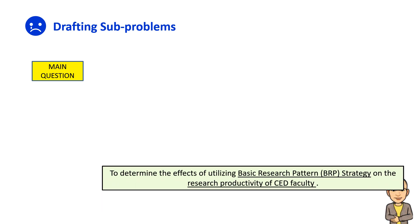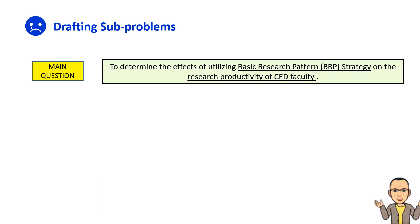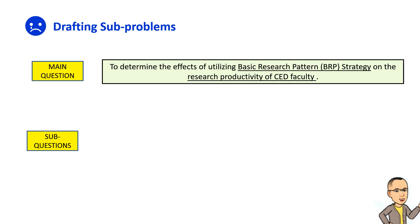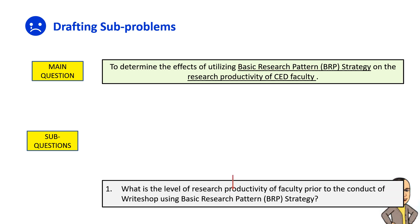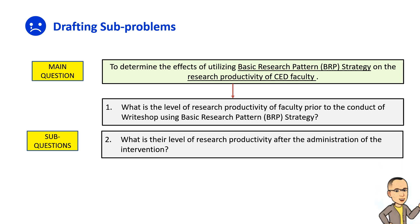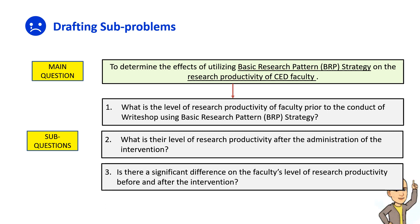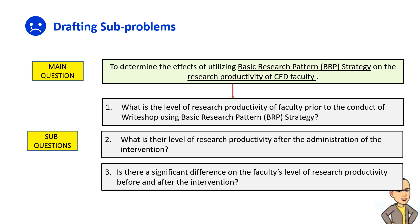After the main question or main problem is formulated, the crafting of research sub-questions follows. The identification of sub-problems depends on the scope or breadth of the study. The number of sub-questions can be initially determined by the researchers but can be adjusted by the panelists, research faculty, or research advisor during the proposal defense or topical presentation. In this particular example, three sub-questions are recommended: the first pertains to the faculty's level of productivity before the treatment; the second pertains to their level of productivity after the treatment; and sub-question 3 addresses the difference in research productivity levels before and after the intervention.